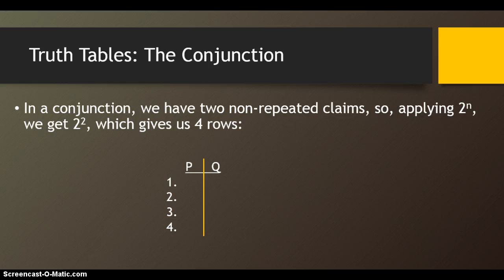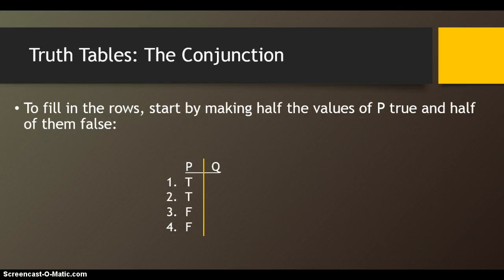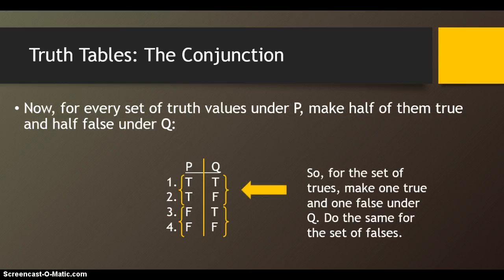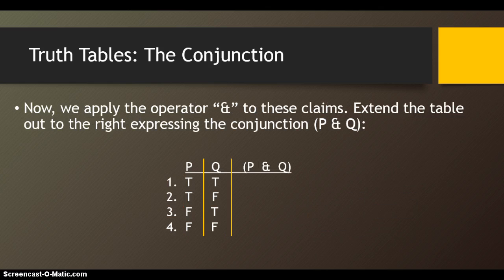In a conjunction, we have two non-repeated claims, so applying 2 to the n, we get 2 squared, which gives us 4 rows. To construct the rows, start by making half the values of P true and half false in the column under P. Then under Q, take half the set of truth values and make half of those true and half false. So for the set of trues, make one true and one false under Q; for the set of falses, make one true and one false under Q. The last column of every truth table will have alternating truth values: true, false, true, false. Now we apply the operator AND, extending the table to the right expressing the conjunction P and Q.